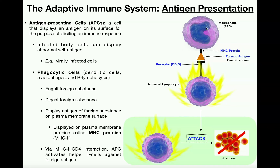We now have an activated lymphocyte. It is now sensitized to and activated against this specific antigen from Staphylococcus aureus. Depending on which type of lymphocyte we have, it will then carry out whatever mechanism it uses to fight the infection.